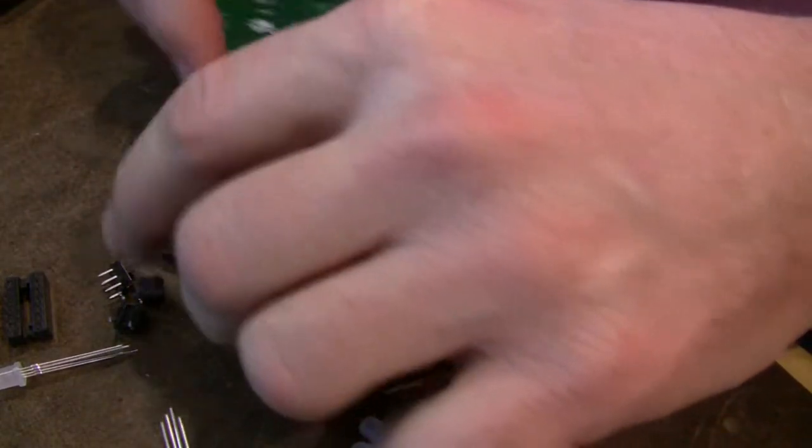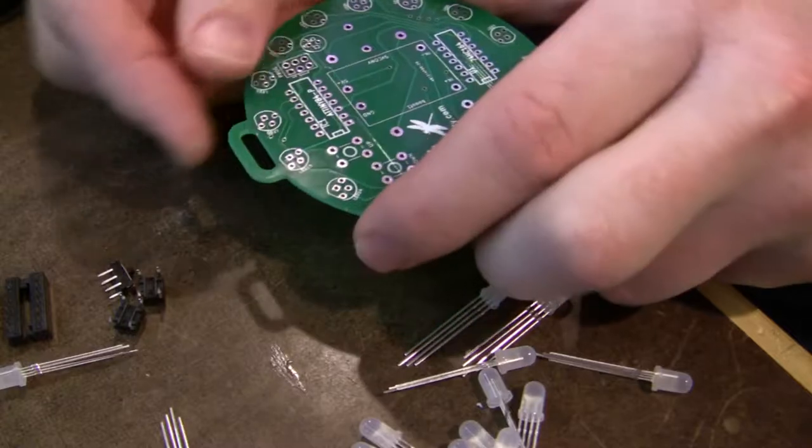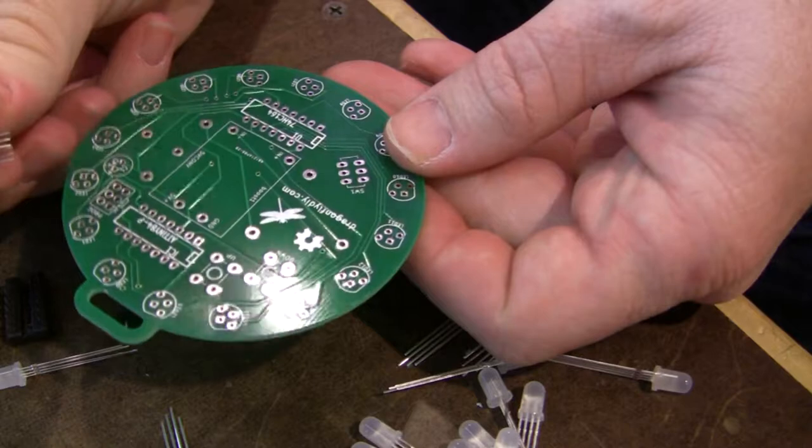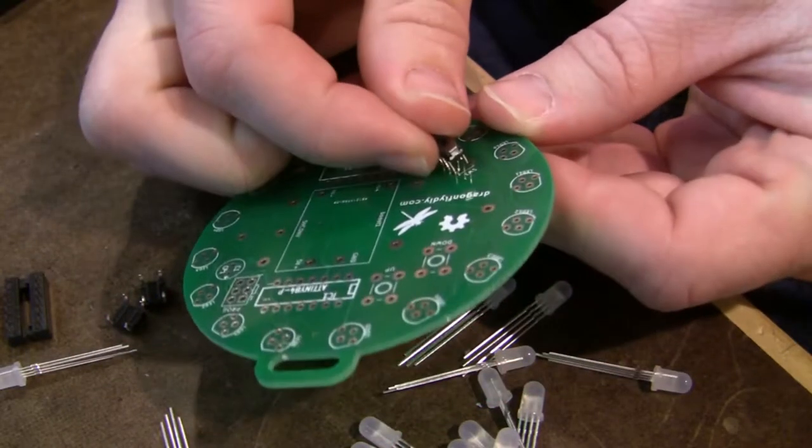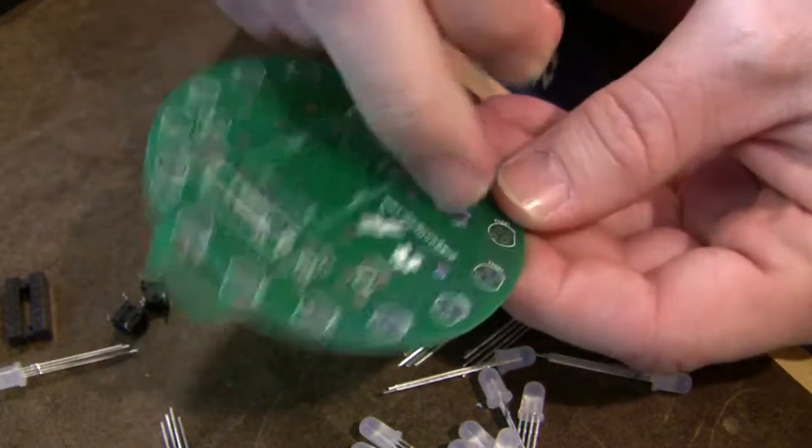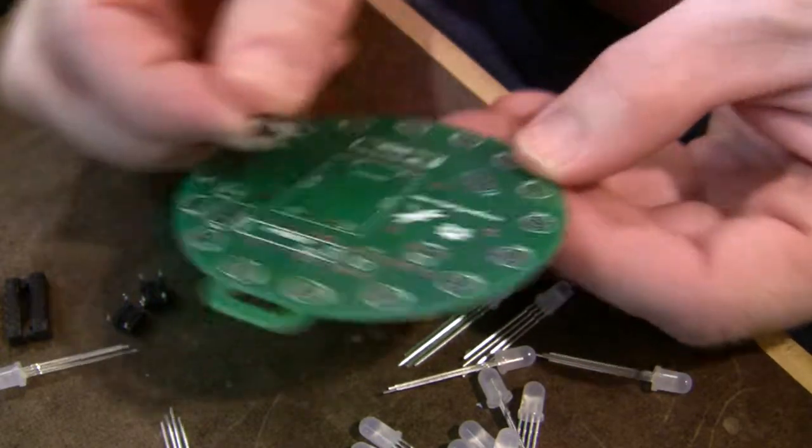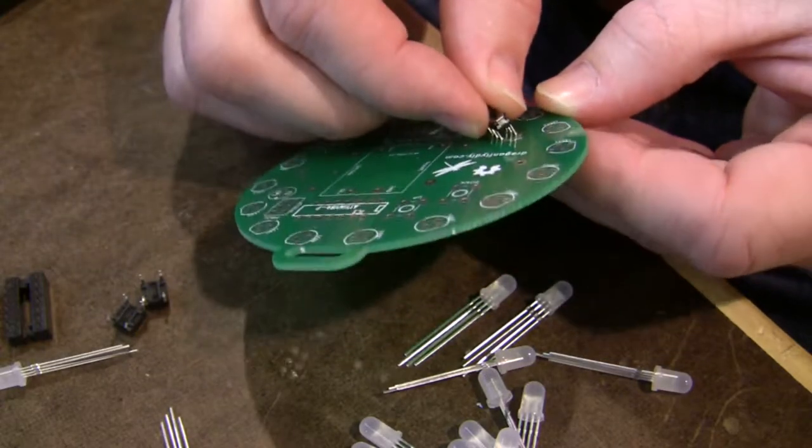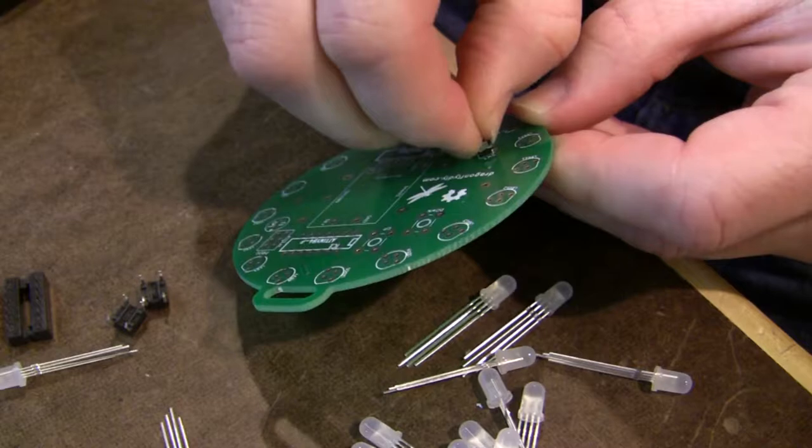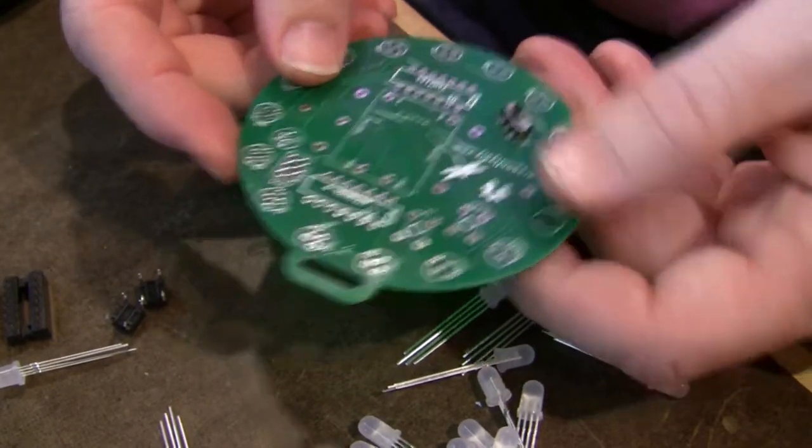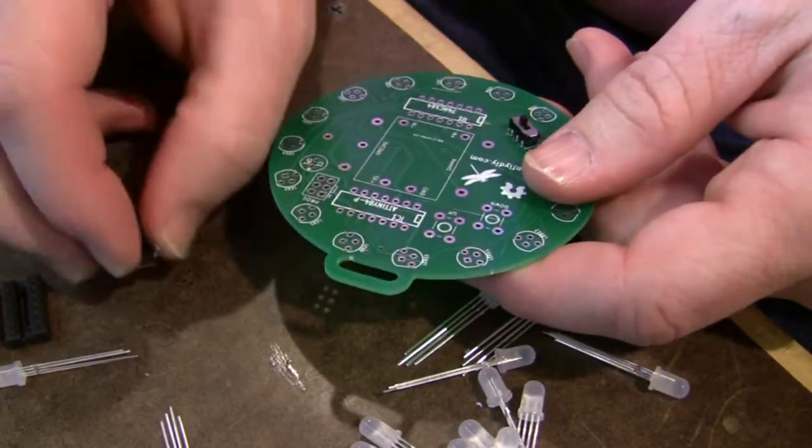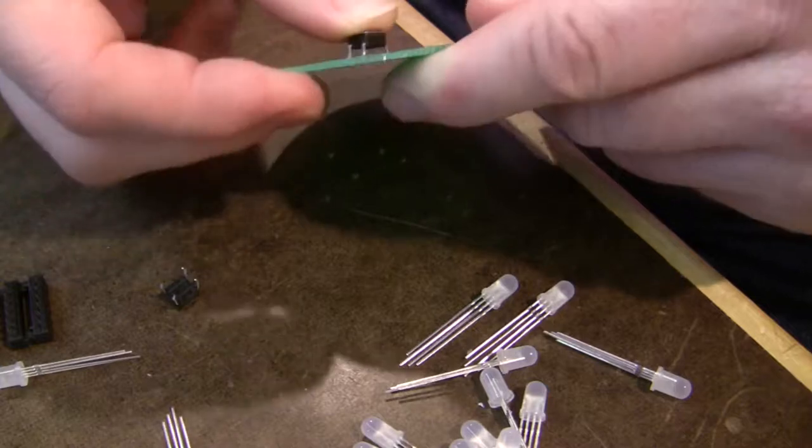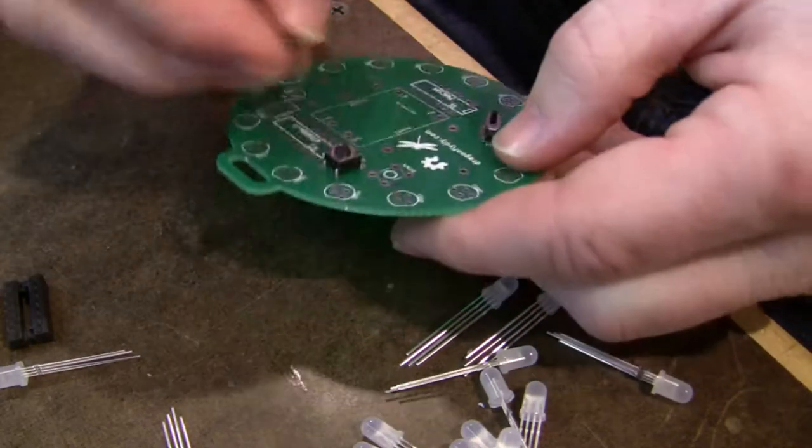So the first thing you're going to want to do is usually put in the lowest profile thing first. That would be this little power switch. Stick that in there, into where it says SW1. Do not put it up here where it says PROG, that's the programming header. I've had people do that. It pretty much holds itself in place. You might as well do the two push button switches too. Those also hold themselves in place.